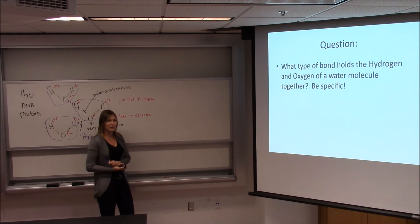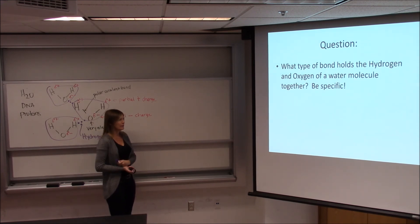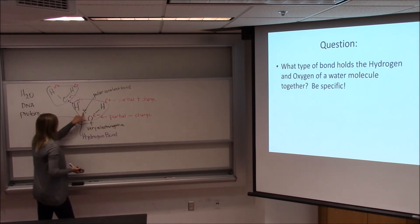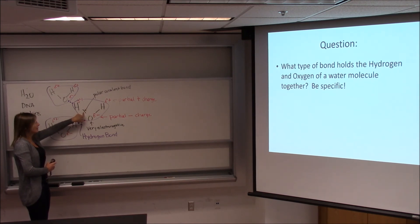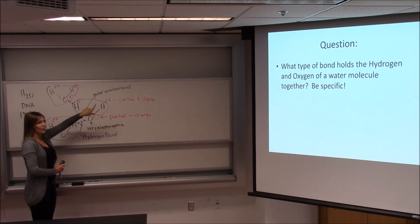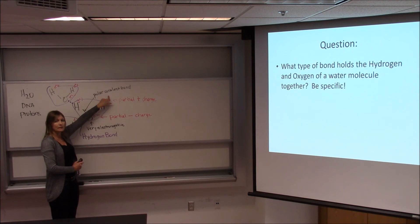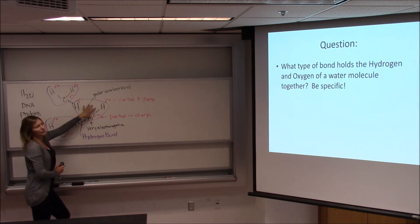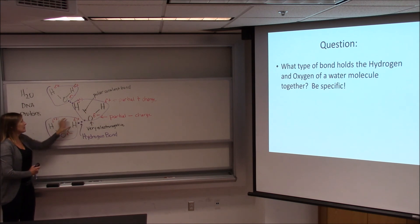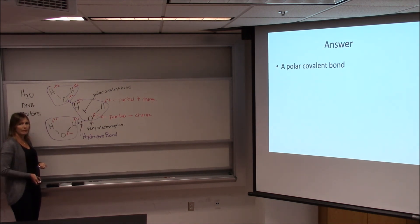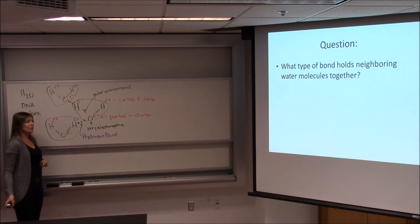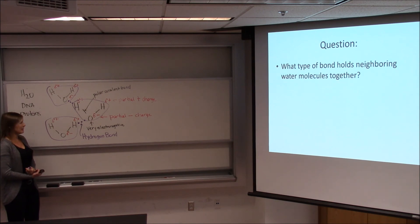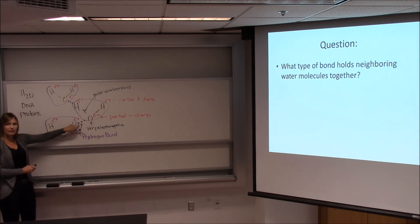Quick review question before we move on: what type of bond holds the hydrogen and oxygen of a water molecule together? Which bond on this picture is it talking about? It's a polar covalent bond. When it says be specific, it means don't just say a covalent bond — and of course the correct answer is not hydrogen bond. It's really important that you know the distinction between what's holding the water molecule together versus what is holding neighboring water molecules together. The next question: what type of bond holds neighboring water molecules together? That, of course, would be the hydrogen bond.